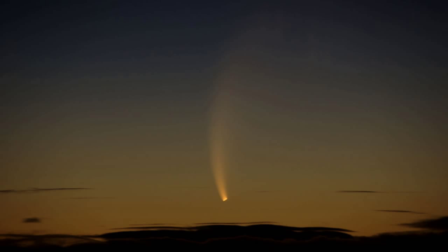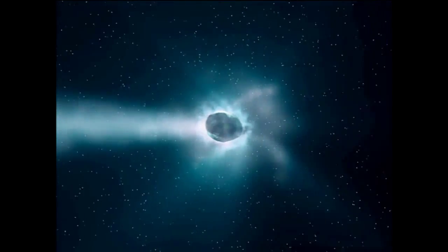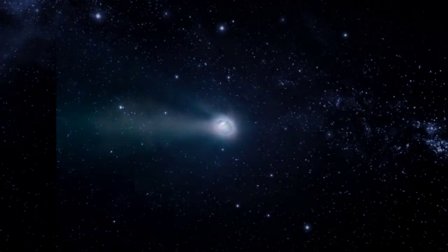Comets are remnants of the formation of the Solar System, dark balls of ice and dust that linger beyond the orbit of Pluto, occasionally plunging into the inner Solar System where they're set aglow by the heat and radiation from the Sun.